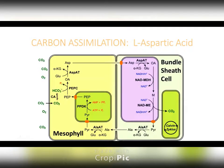We're going to start talking about C4 plants. C4 plants have evolved and developed these organelles and structures that involve mesophyll and then the bundle sheath cells. The whole point of this is that they're trying to concentrate the carbon in the plant and maximize photosynthetic efficiency.